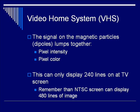There were two significant formats for videocassette tapes. The most common one was the Video Home System, or VHS. In this case, the signal within the magnetic particles lumped together both pixel intensity and pixel color. This could only display 240 lines on a TV. Remember that our NTSC format could display 480 lines of image, so we were not getting the same level of resolution using VHS that we were recording at.